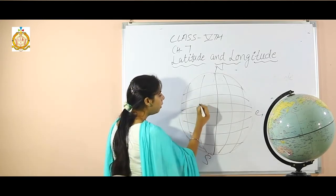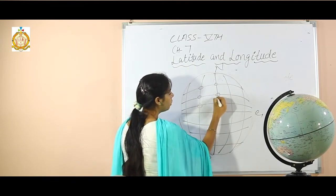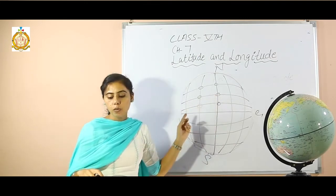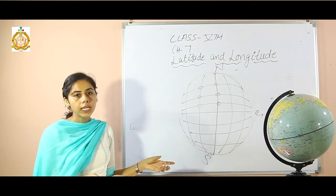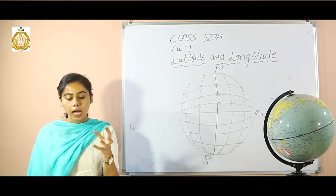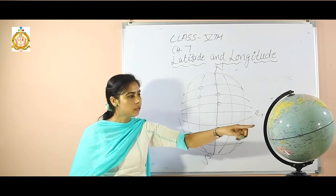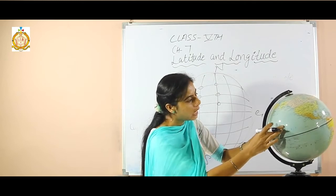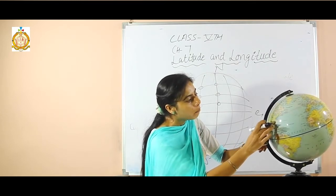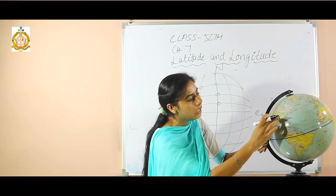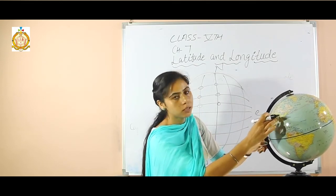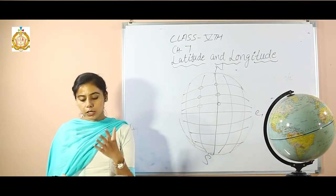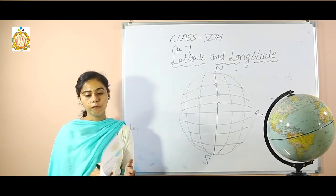Where longitude and latitude intersect with each other, those points are called coordinates. Coordinates help us to locate any place or point on the earth's surface. The grid system helps us in locating places on the surface of the earth.